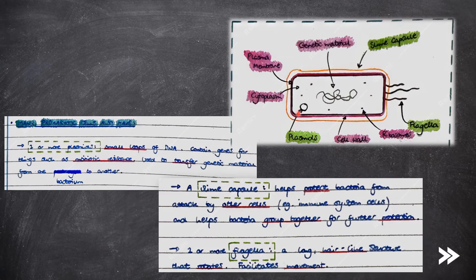Some bacteria also have a slime capsule, which helps protect the bacteria from attack by other cells such as lymphocytes and helps bacteria group together for further protection. Bacteria may also have one or more flagella, which are long hair-like structures that rotate and facilitate movement.